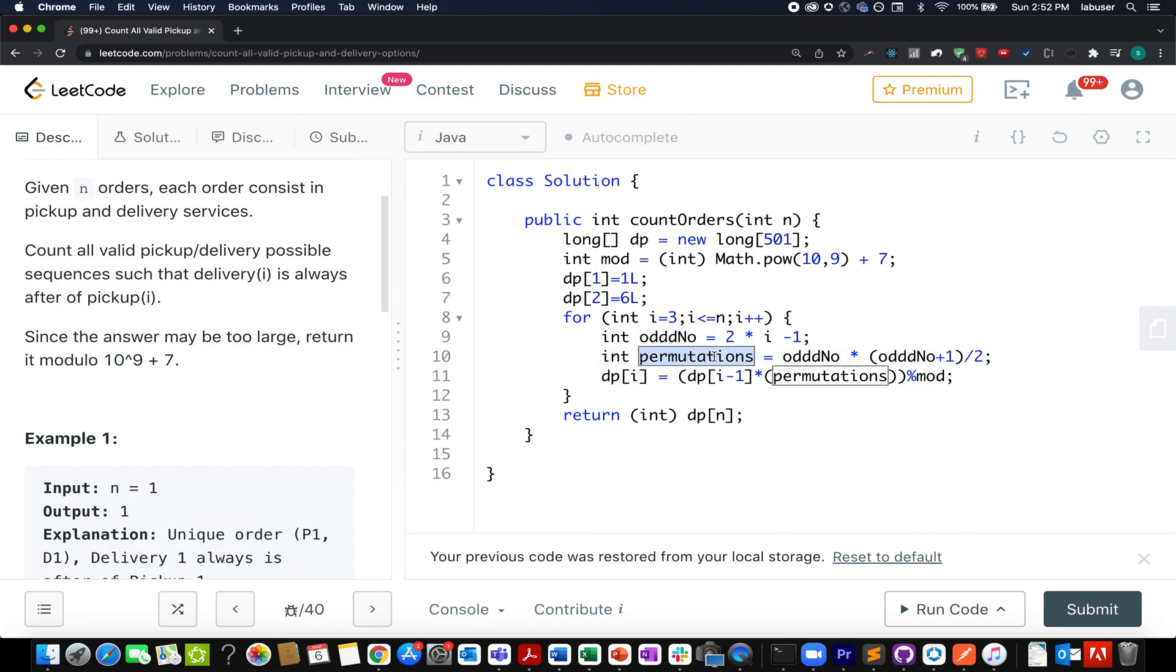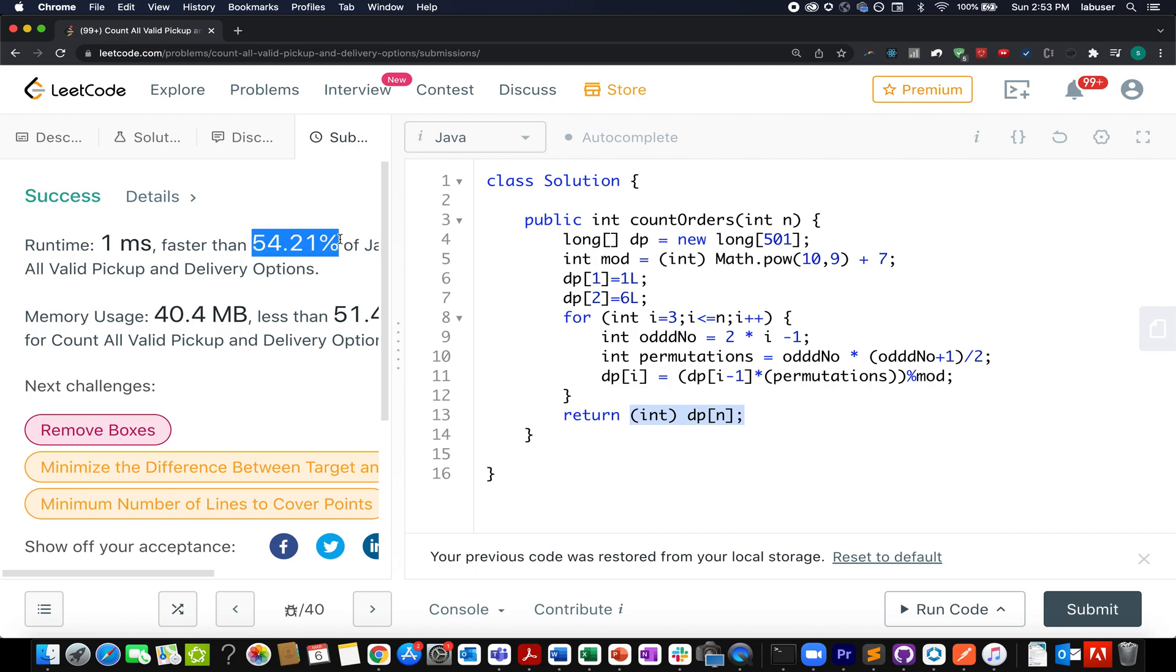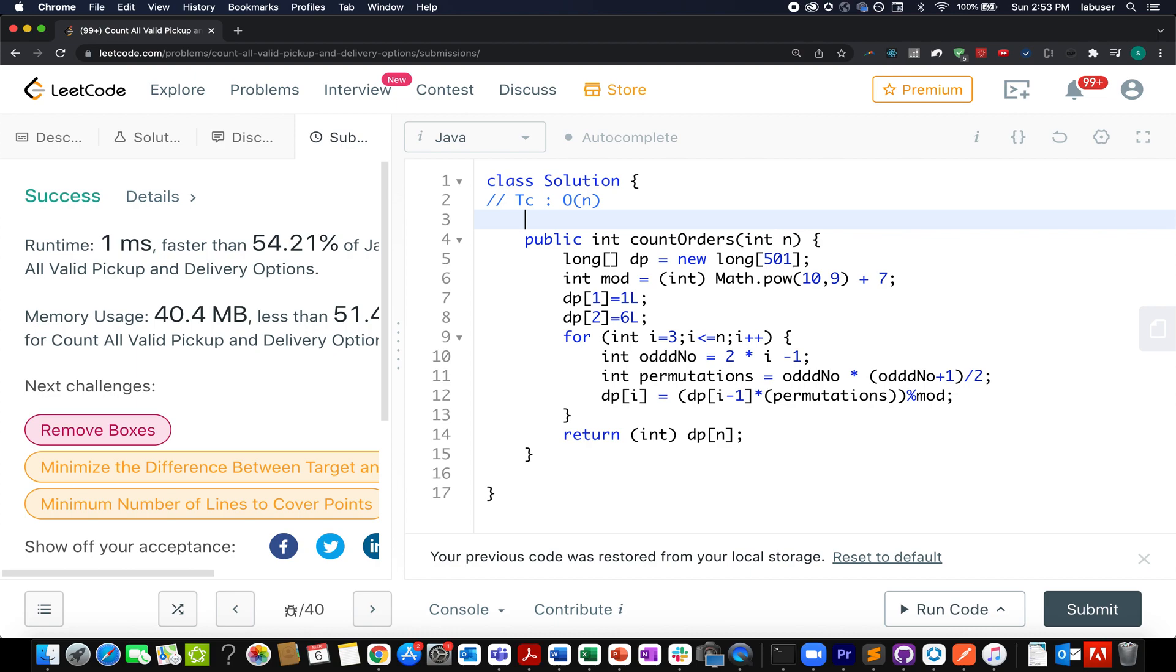In the end, I simply type cast into int and return the solution. So let's try this up. Accepted, 54 times faster, which is pretty good. Again, time complexity of this approach is order of N and space complexity is again of order of N.